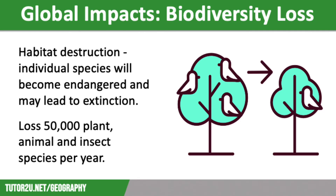This loss of species is horrendous on many levels, but it also means that cures for life-threatening diseases are also lost. By 2030, parts of the Amazon rainforest could have lost between 30% and 45% of their main species. A recent Global Biodiversity Summit saw countries coming to an agreement to protect 30% of global land in order to slow down the loss of biodiversity.